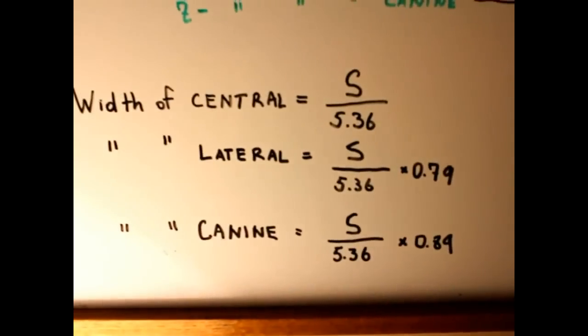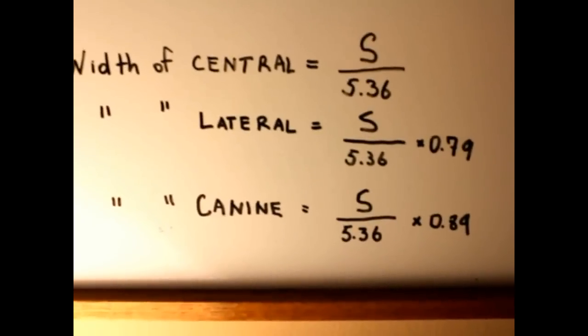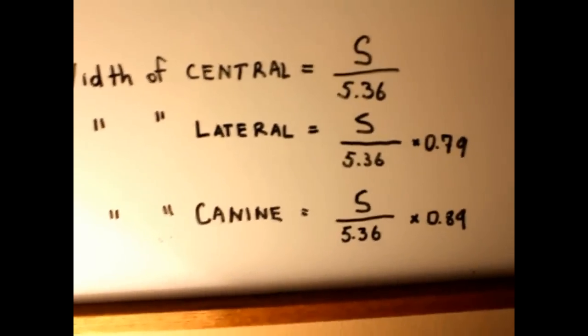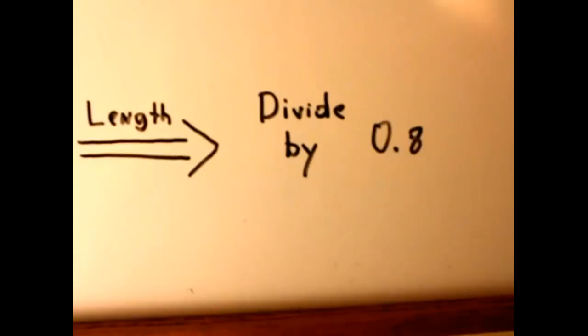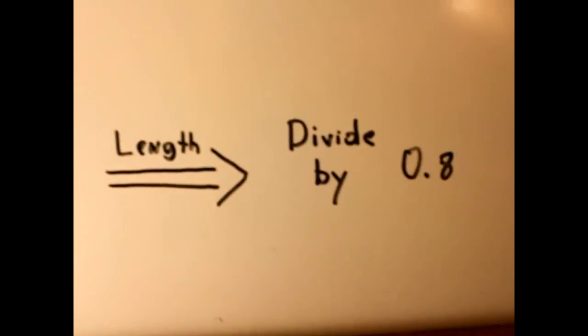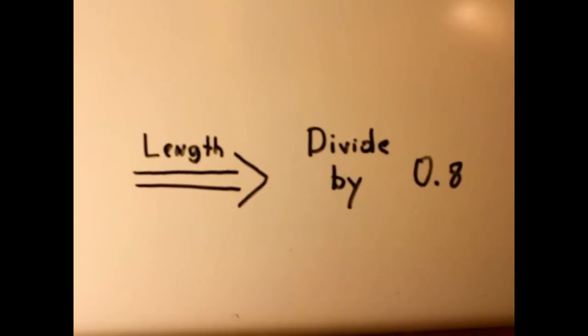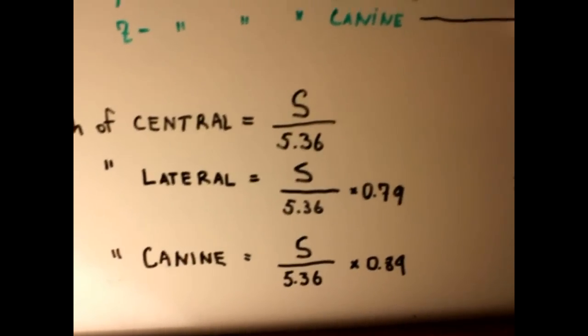And if you want to find out the ideal length — let's say for the central — you take that width number and divide it by 0.8, and that gives you the ideal length. This is very easy. Thank you for watching, and I hope you enjoyed it.